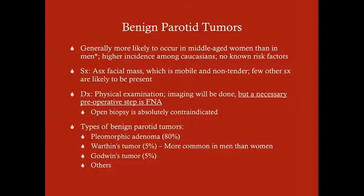Benign parotid tumors are generally more likely to occur in middle-aged women than in men, though one specific benign type is more common in men. There's a higher incidence among Caucasians but no known risk factors. The symptom is simply an asymptomatic facial mass that tends to be mobile and non-tender. This is often a chronic, slow-growing mass — patients can usually report it's been present for weeks to months, not days.